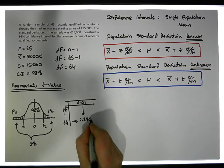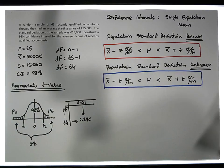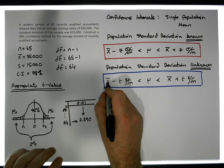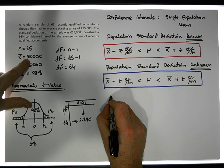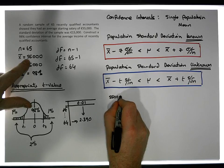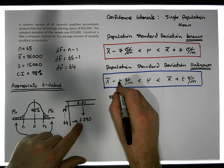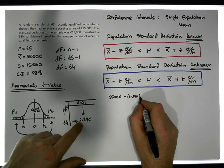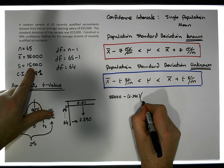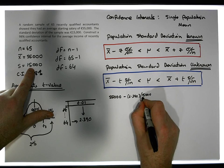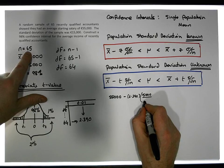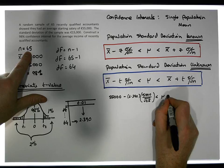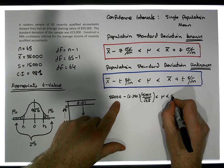Now we have all of our values. Our confidence interval is going to be x-bar, which is 55,000 euros, minus the t-value, which is 2.390, times the standard deviation of 15,000, divided by the square root of 65. That value must be less than μ, which must be less than 55,000 euros.